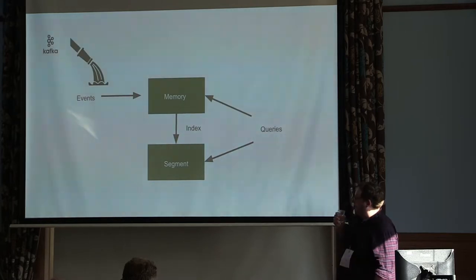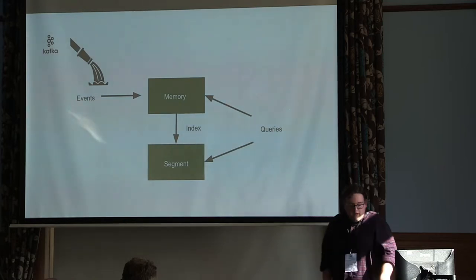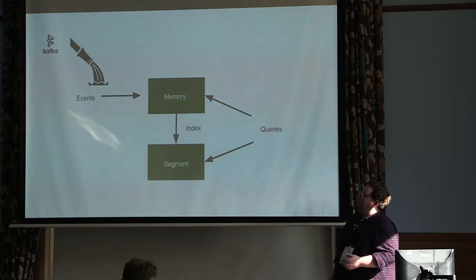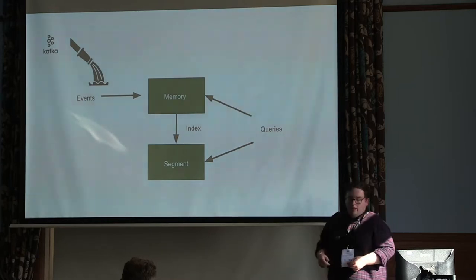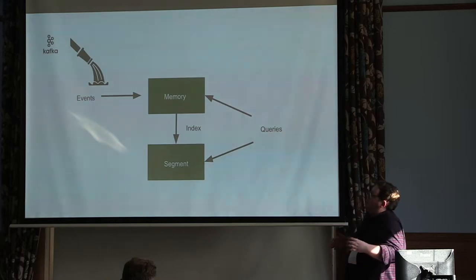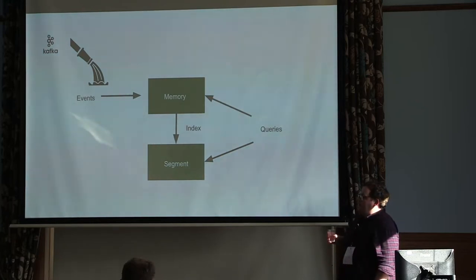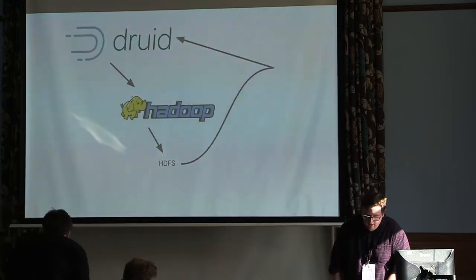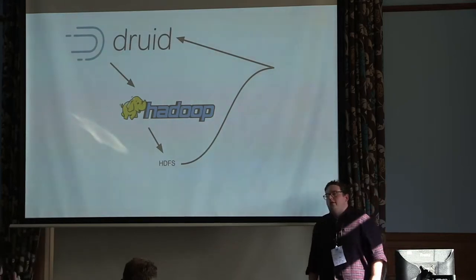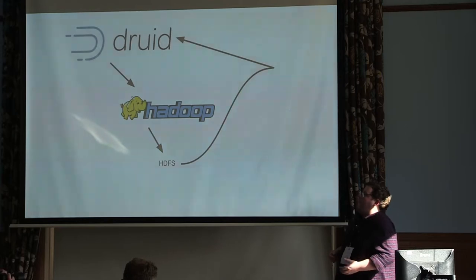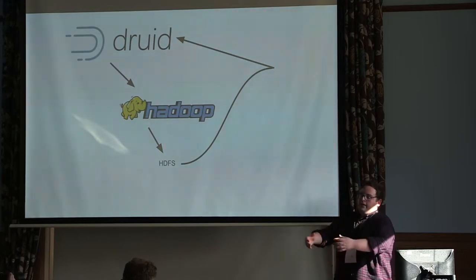Druid can ingest this data in real time. It takes all these events and stores them inside a concurrent hash map, keeping it in memory until it reaches a certain size, then it performs that indexing process and puts the data into a segment. While that hash map is being built or even indexed, it can answer queries on it — so you can get results practically in real time, as soon as the data has been ingested it's available for querying. Druid can also take data from HDFS — you submit a request and it'll go fetch JSON files, CSV files, Avro, whatever you want, run a MapReduce job to do the indexing, and bring those segments back into Druid.